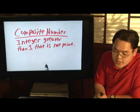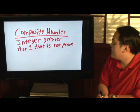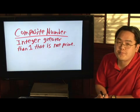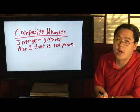So here's the definition of a composite number. It is an integer greater than one. Now, by integers we're talking about whole numbers, but those whole numbers are going to be greater than one that is not prime.